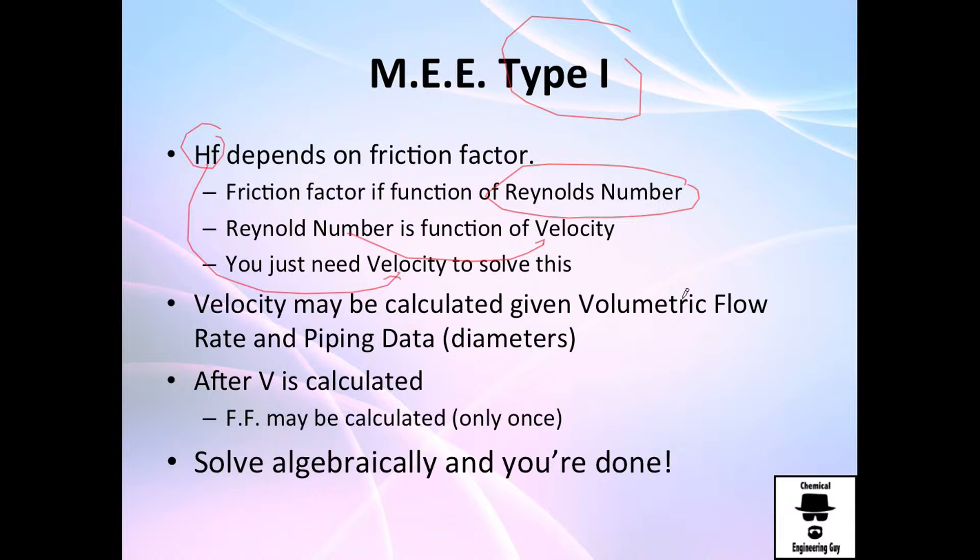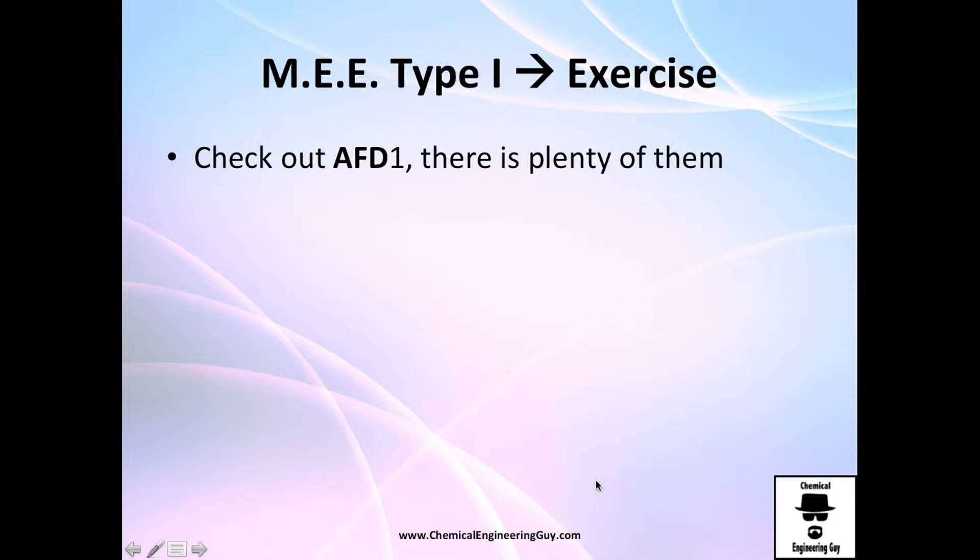Velocity may be calculated given the volumetric flow rate divided by the area of the pipe, and you have the diameters. You're probably going to have the data of diameters, you will be able to calculate velocity, and with velocity you calculate friction loss and velocity heads, and you can solve algebraically and you're set.